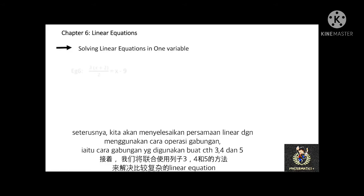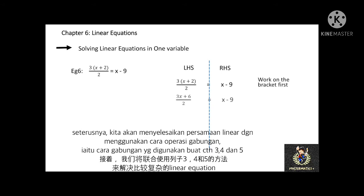Let's see example 6: 3 bracket x plus 2 close bracket, all over 2, equal to x minus 9. Like I said previously, we will work on the bracket first — bracket x plus 2 close bracket. 3 multiplied with x plus 3 multiplied with 2 equal to 3x plus 6. Then, the fractional form still exists. Therefore, we use the cross multiplication method to get rid of it. The denominator 2 on the left-hand side will be multiplied with x minus 9 on the right-hand side, which equals 2x minus 18.